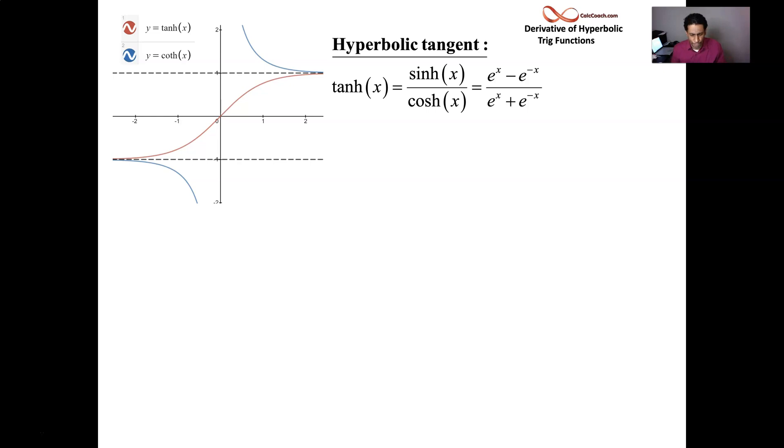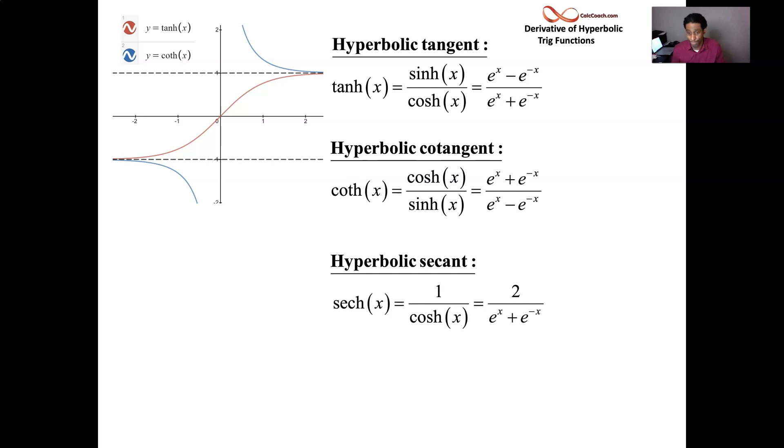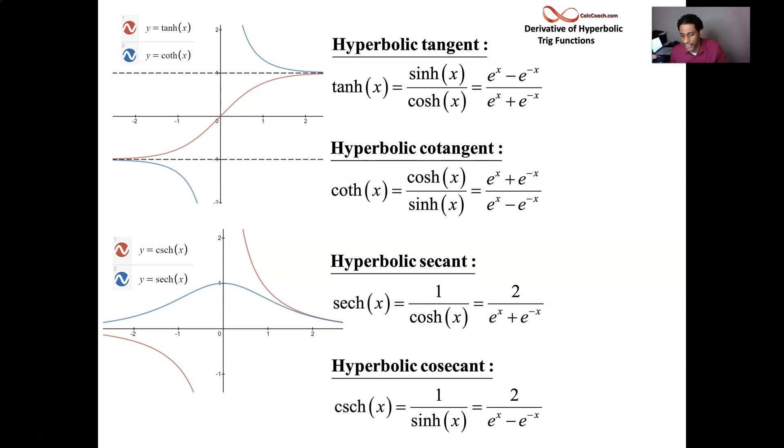And then we have hyperbolic cotangent, which is going to be this guy's reciprocal. So just flip it. And then we have the last two, the secant and the cosecant. Hyperbolic secant is going to be the reciprocal of hyperbolic cosine. There's its graph in blue there. And then hyperbolic cosecant will be the reciprocal of hyperbolic sine. And its graph is in red there.